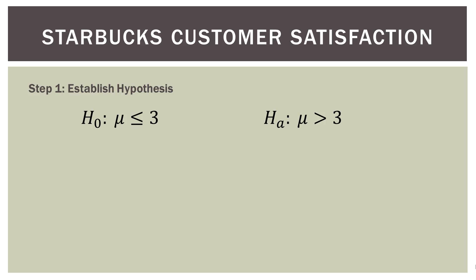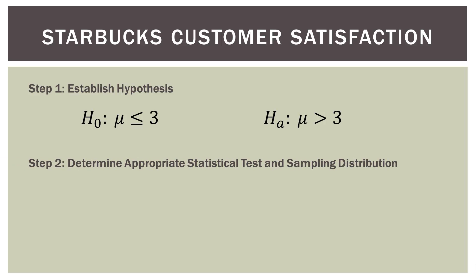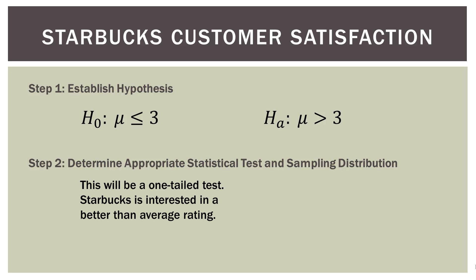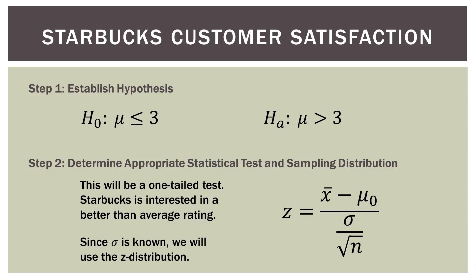Our alternative hypothesis is that the satisfaction level is higher than 3. We assume it's 3 or less, then either reject or fail to reject that, and move on to our alternative. Remember, the equality portion is always in the null. For step two, this will be a one-tailed test — Starbucks is interested in a better-than-average customer service rating, so we're testing if the average is greater than 3. Since sigma is known, we'll again use the Z distribution.